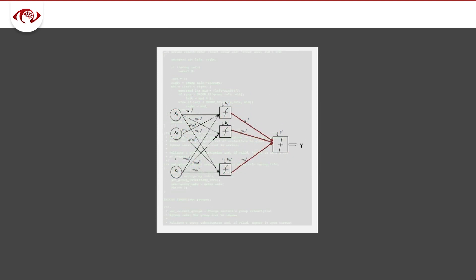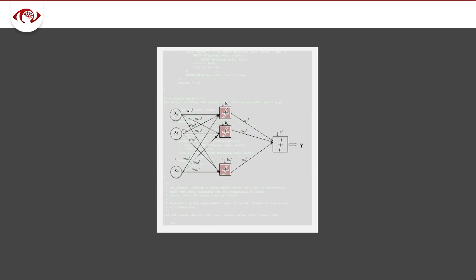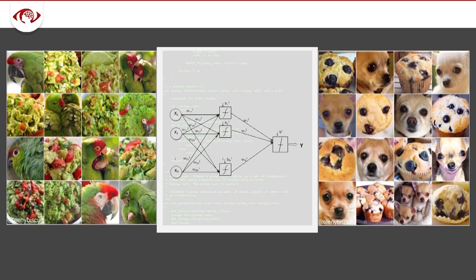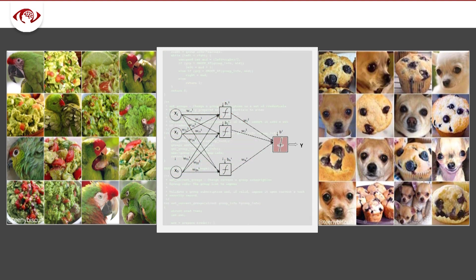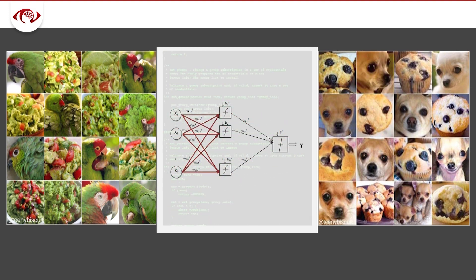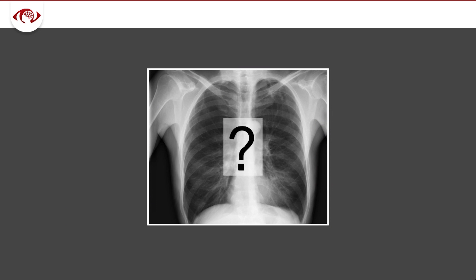We now have GPUs and powerful neural networks. Computer scientists can do incredible things like tell the difference between parrots and guacamole, and blueberry muffins and chihuahuas. But those of us in imaging ask ourselves: why can't we do this for medical imaging, and can we do something more meaningful and impactful?